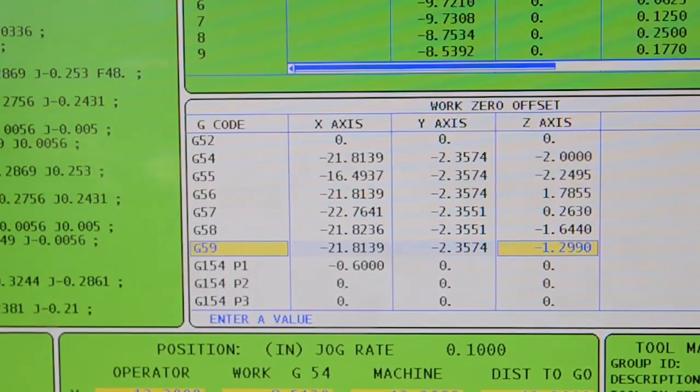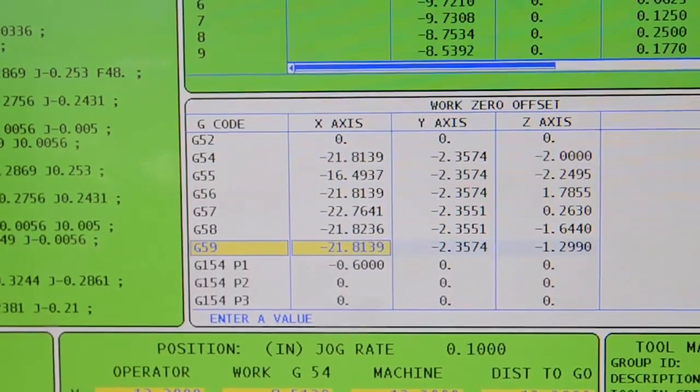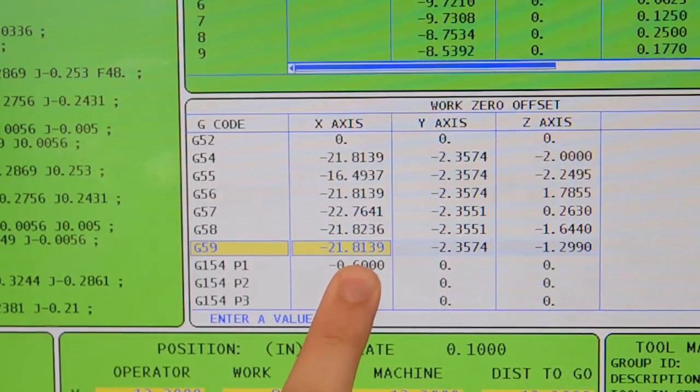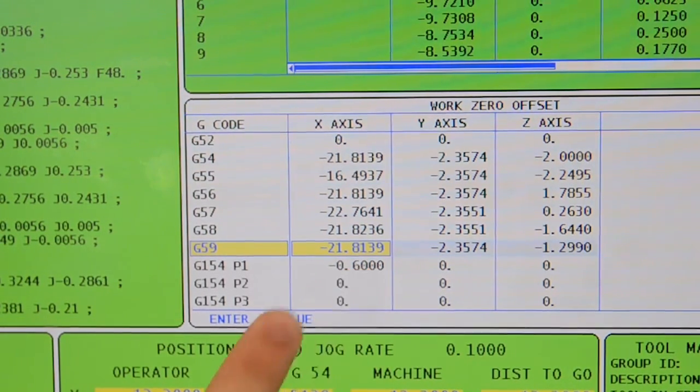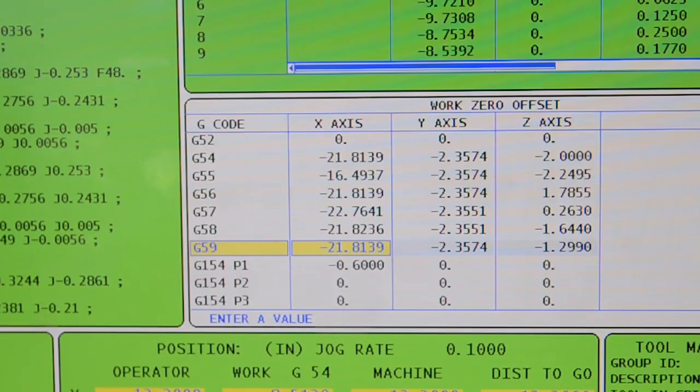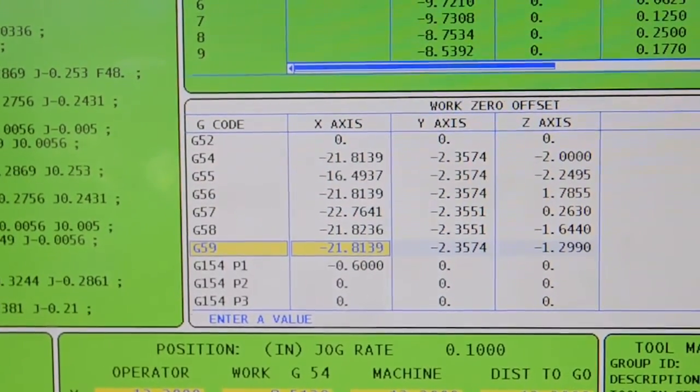To change our x-axis offset, you'll scroll over to the x-axis spot right here. We want to make it move in the positive x-axis. So what we'll do is add 0.534 and then press right slash enter.